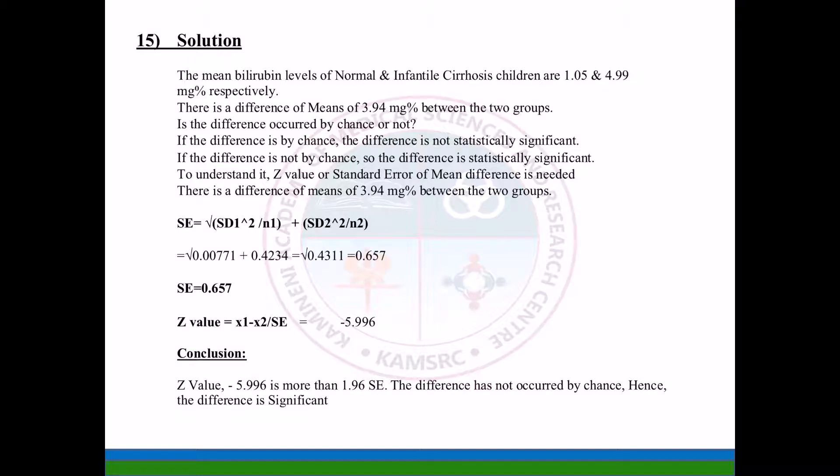The z value is equal to -5.996. In conclusion, the z value of -5.996 is greater than 1.96 in magnitude, so the difference has not occurred by chance. Hence the difference is significant.